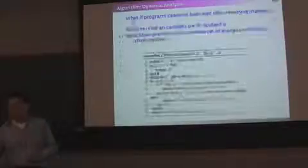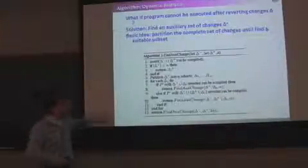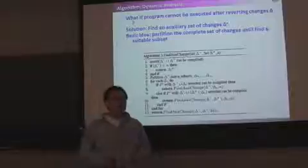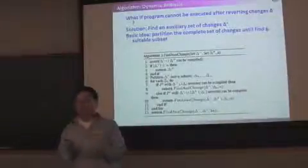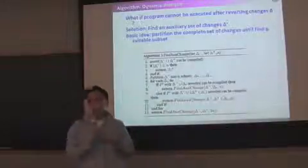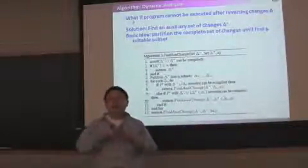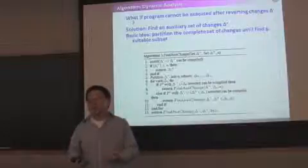We say, oh, this has to be due to this. So we have a function to find auxiliary set of changes. When combined together with a change you want to observe, it makes the program executable.